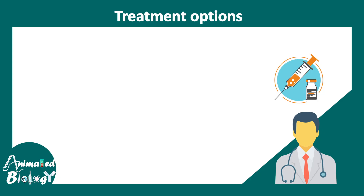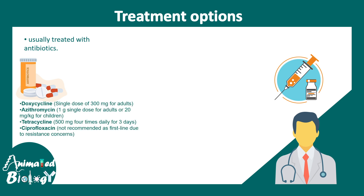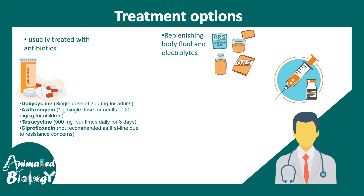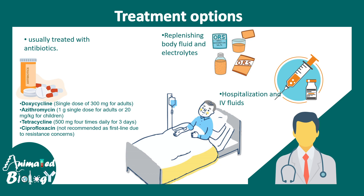The treatment is simple: rehydrate and treat with antibiotics, since it is a bacterial disease. Several antibiotics can be used, including doxycycline, azithromycin, tetracycline, and ciprofloxacin. The most important intervention is oral rehydration solution (ORS), because a huge amount of fluid is lost in cholera and must be replenished efficiently. In severe cases, the patient must be admitted to hospital and given IV fluids. It is no longer a fatal disease and is highly manageable, though dehydration can still cause serious problems.